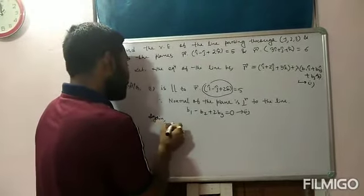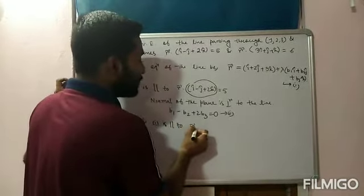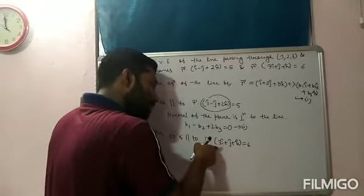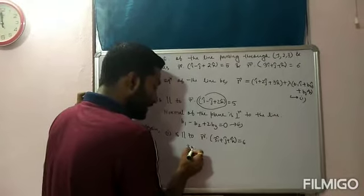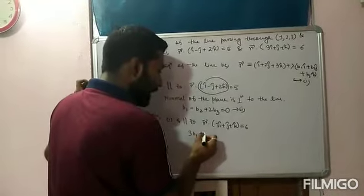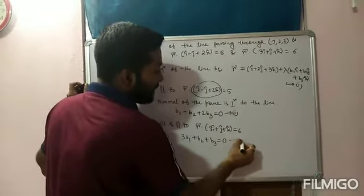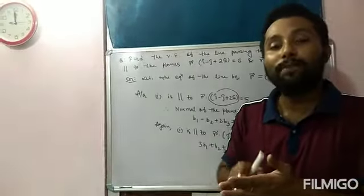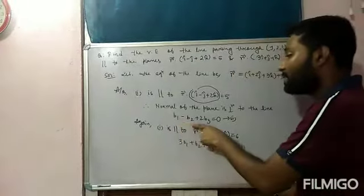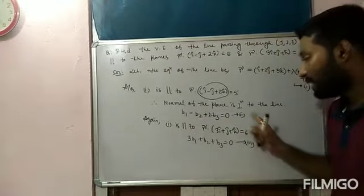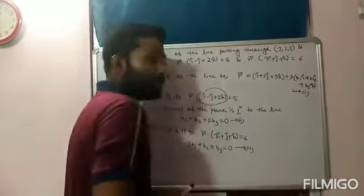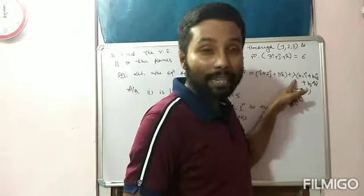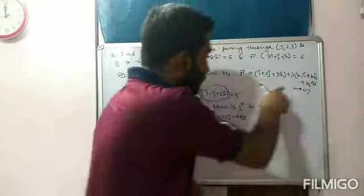Again, equation 1 is parallel to the second plane R̄·(3î + ĵ + k̂) = 6. The normal of that plane is also perpendicular to the line, so: 3B₁ + B₂ + B₃ = 0. This is equation 3. Now we have two equations (2 and 3) with three unknowns B₁, B₂, B₃. We solve them using the cross-multiplication method.